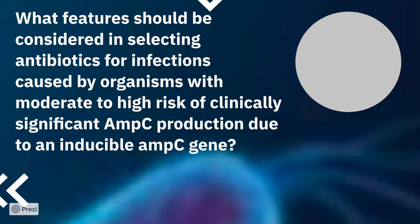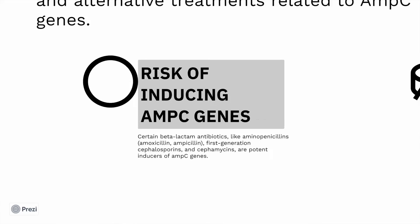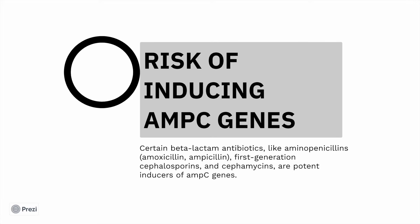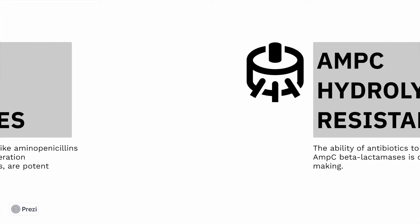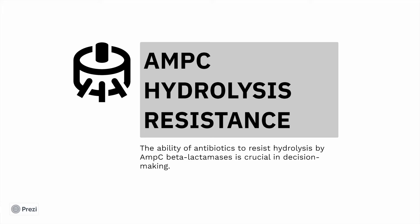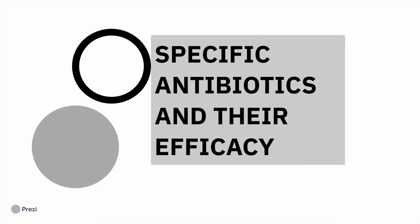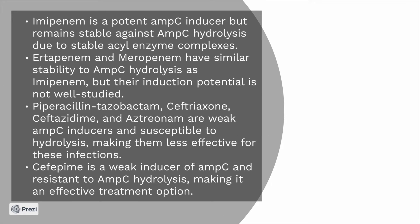Next is what features should be considered in selecting an antibiotic for infections caused by organisms with moderate to high risk of clinically significant AMP-C production due to an inducible gene. The risk of induction of the AMP-C gene is higher with beta-lactam antibiotics like aminopenicillins, first-generation cephalosporins, and cephamycins, because these are potent inducers of the AMP-C gene. AMP-C hydrolysis resistance is crucial in decision making when selecting antibiotics.